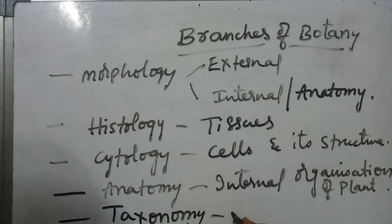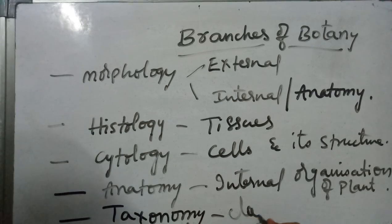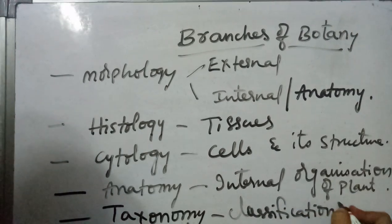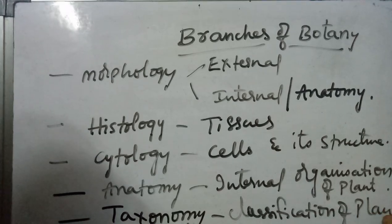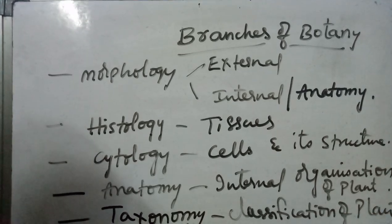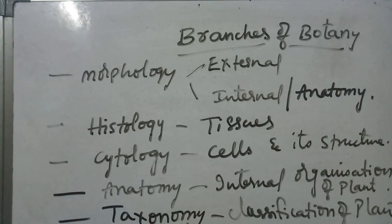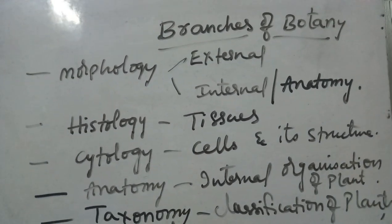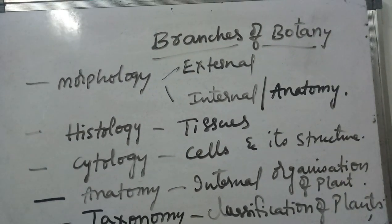Taxonomy is a branch of botany that deals with the classification of plant bodies, or classification of different plants. Systematics and taxonomy are essentially the same — both deal with the classification of plants. Three topics come under taxonomy: identification, nomenclature, and classification.